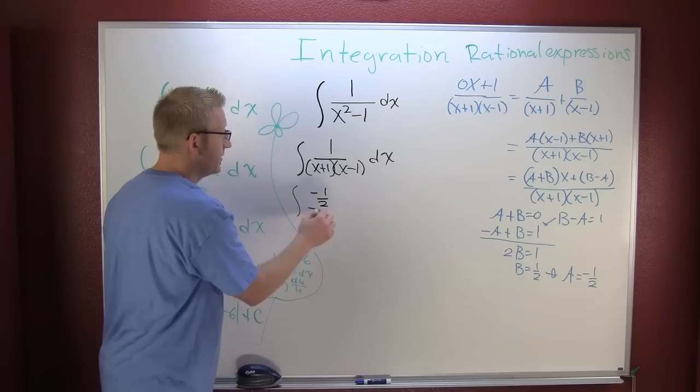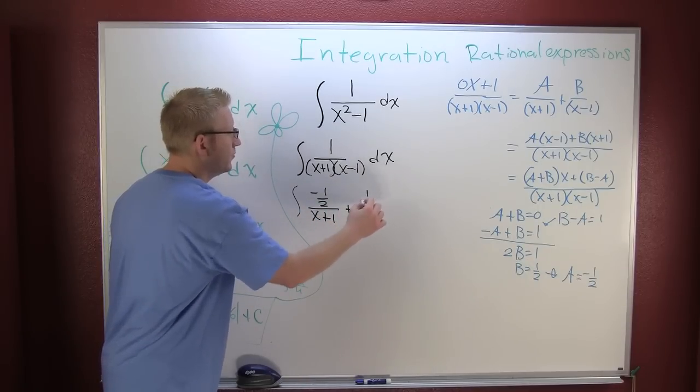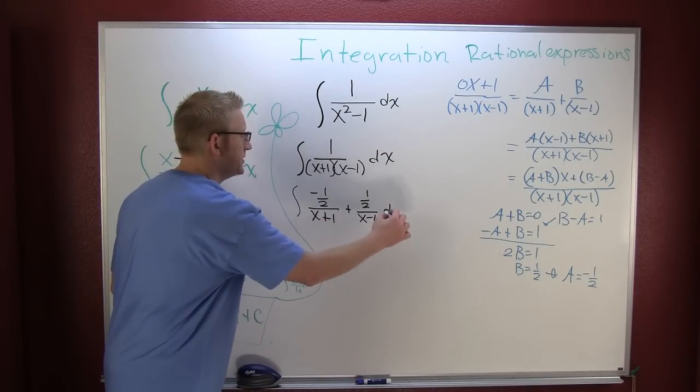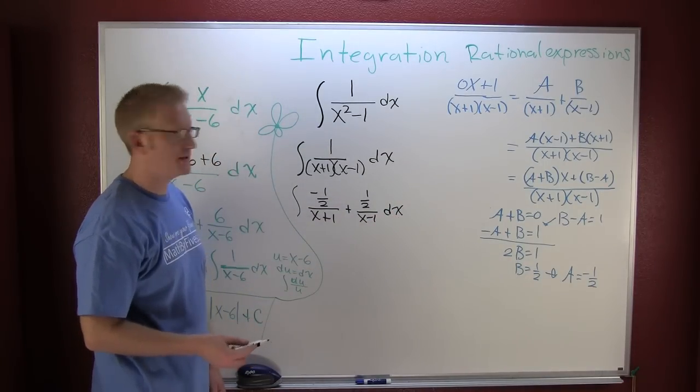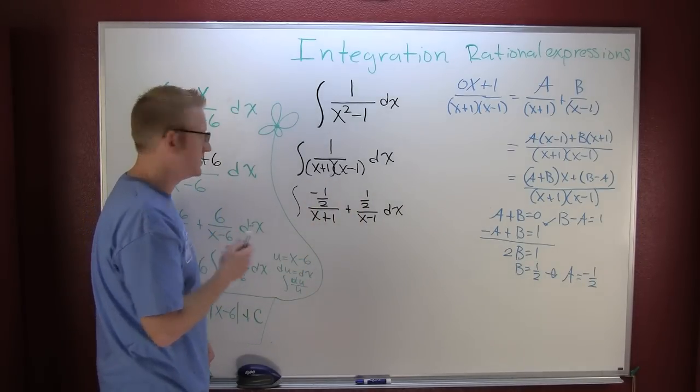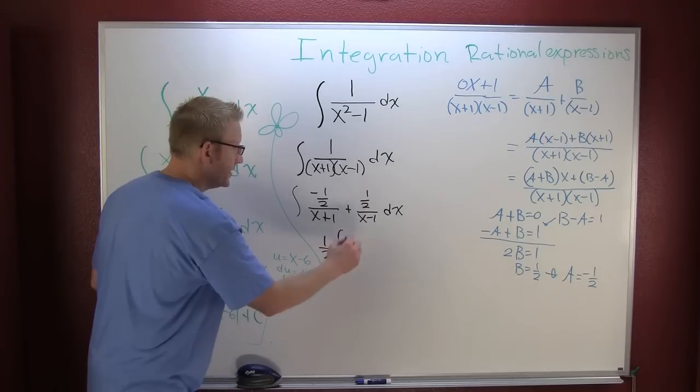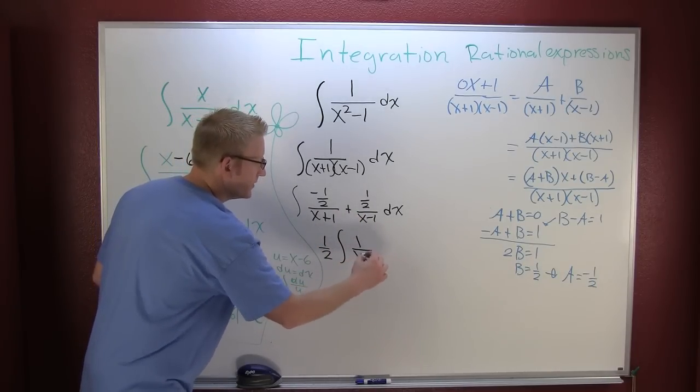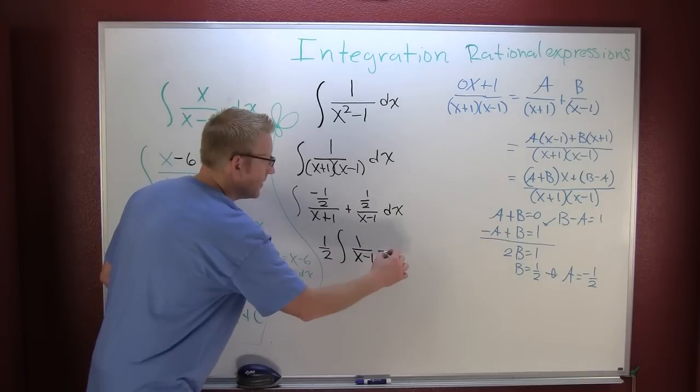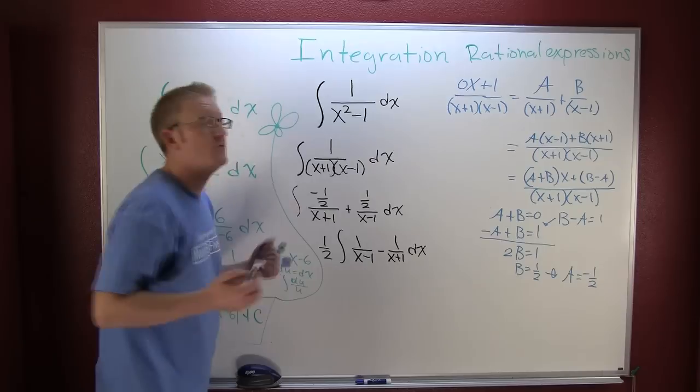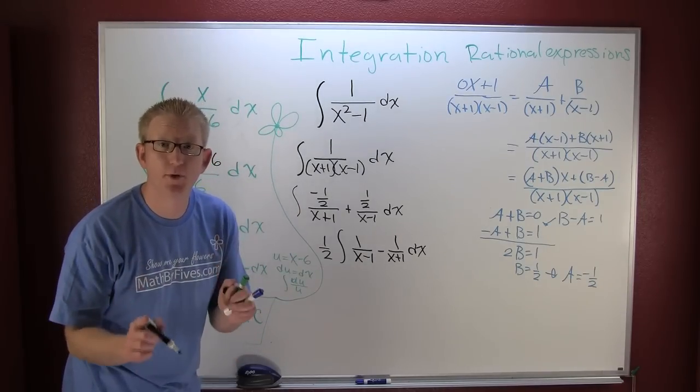Negative one half over x plus 1 plus one half over x minus 1 dx. Alright, great. I got a half in each term. I'm gonna pull it out. So then there's a half on the outside. And then the integral, I'm also going to switch these two so that I have 1 over x minus 1 minus 1 over x plus 1 dx.